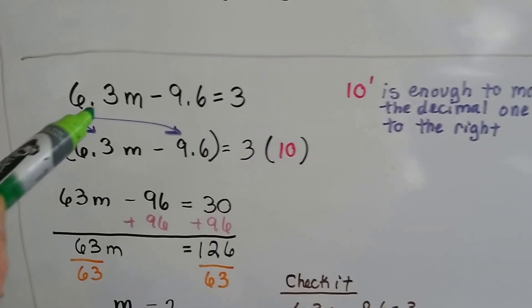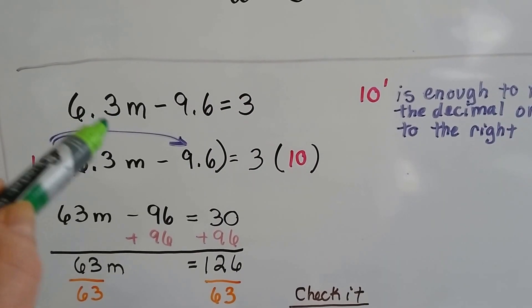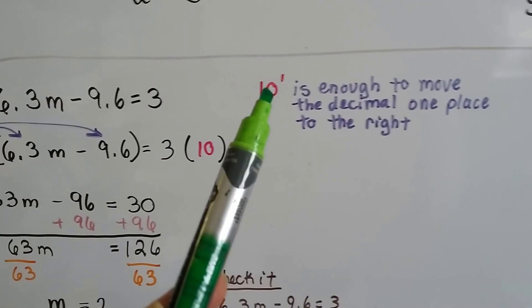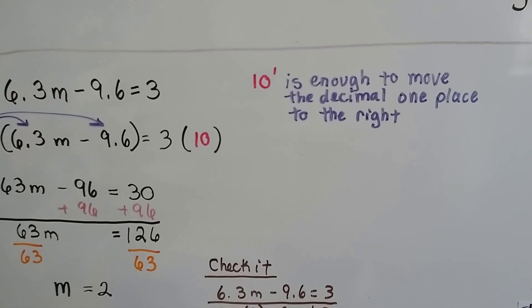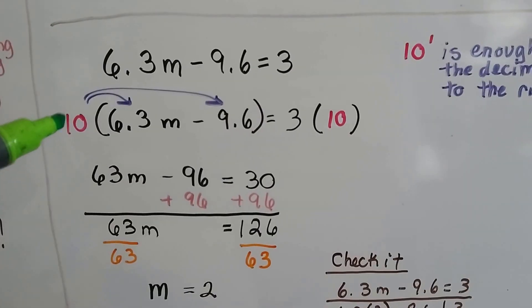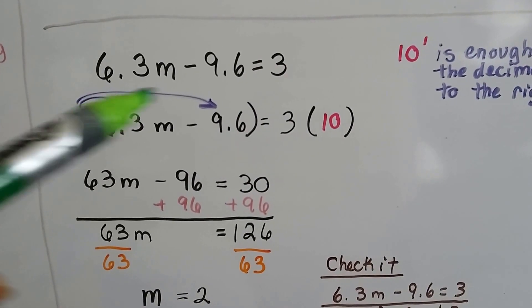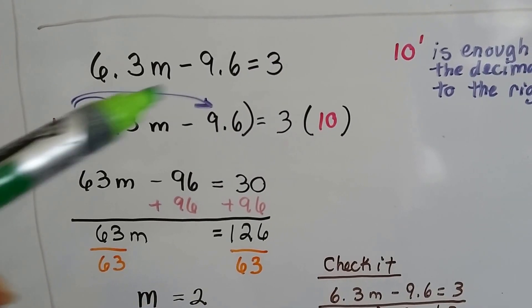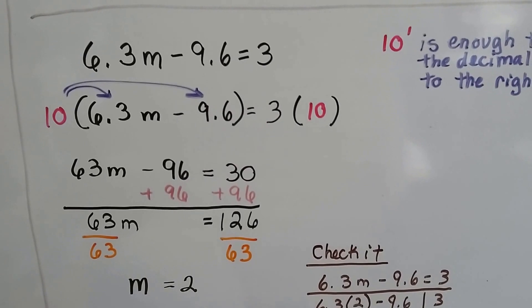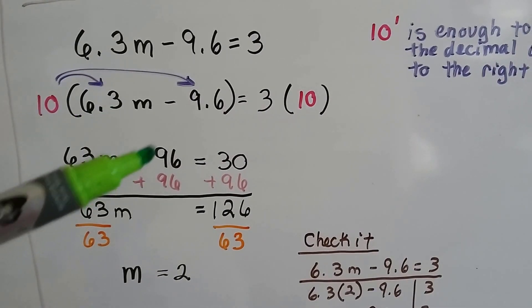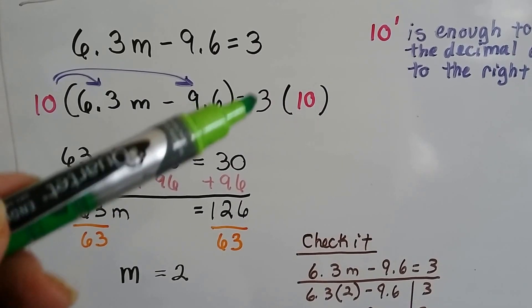In this one, this has only one hop to get rid of the decimal, and this one only has one hop to get rid of the decimal. So in this case, 10 to the first power is enough to move the decimal one place to the right to get rid of it. So we multiply every single term, not just this first one, but every single term by that 10. So we end up with 63m minus 96 equals 30.